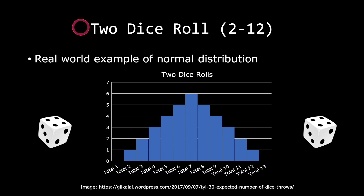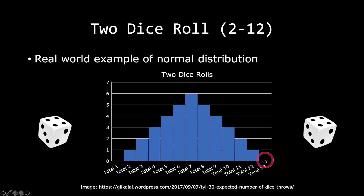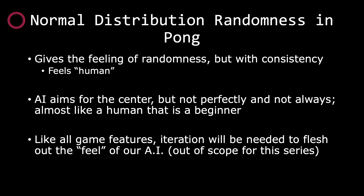Each die has a value between one and six. However, we can never get a total of one, nor can we get a total of thirteen. There is only one chance to get a total of two, but there are six chances to get a total of seven. Our two six-sided dice fit the normal distribution — the closer we are to the mean, which is seven, the more likely the occurrence. To throw a two would be one in thirty-six, but to roll a seven would be six in thirty-six, or one in six. So in a game like Monopoly, expect your values to be between five and nine. Using normal distribution randomness in our game gives us the feeling of randomness with the consistency that feels human.